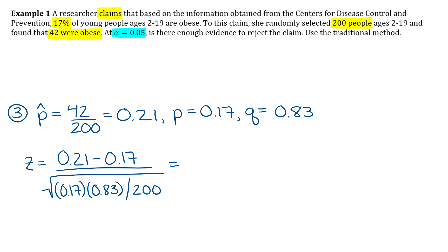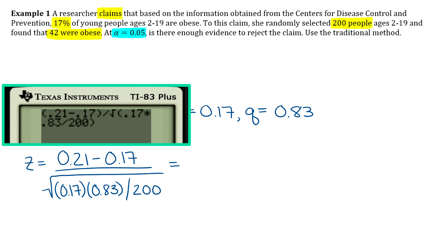Now plug everything into the z-formula for proportions: 0.21 minus 0.17, all over the square root of 0.17 times 0.83 divided by 200. If you have your graphing calculator, grab it out and make sure you can type this in correctly — it's a really hard thing for students to get right. Put parentheses around the entire numerator. When you round your z-value to two decimal places, you get 1.51.